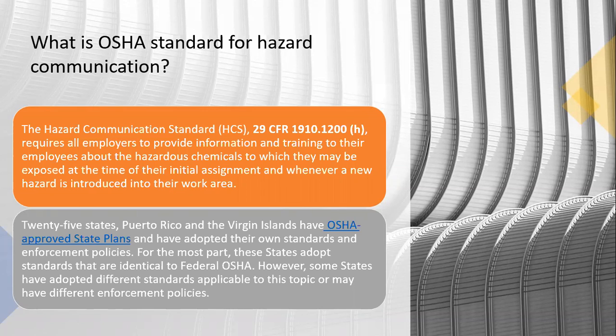There are 25 states, including Puerto Rico and the Virgin Islands, that have OSHA-approved state plans, meaning they have adopted their own standards and enforcement practices. For the most part, states adopt standards identical to federal OSHA. However, some states have adopted different standards applicable to this topic and may have different enforcement policies. So please take note — depending on what state you're in, this may vary slightly.